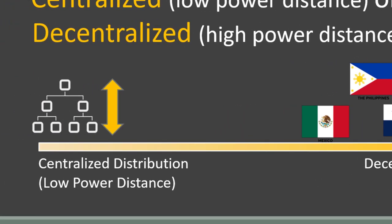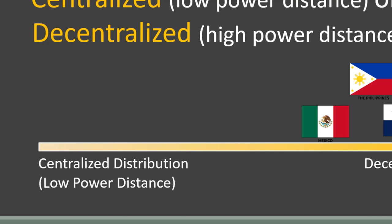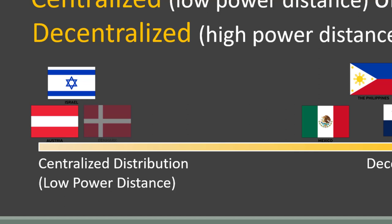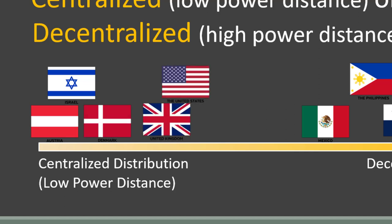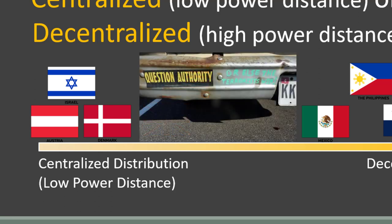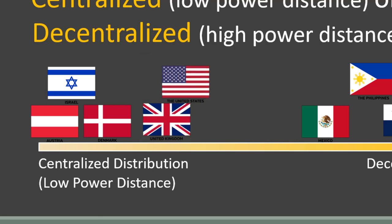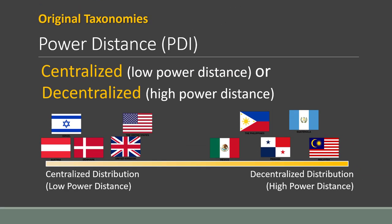On the other end of the scale, where power is more centralized and equality is more equalized, you'll find cultures like Austria, Israel, and Denmark—and yes, the U.S. and the U.K. In these cultures, members are less likely to do something simply because they are told to. In fact, it's common to see U.S. cars with 'question authority' bumper stickers. As a professor, I can tell you that there is a cultural difference between students who challenge my authority and those who just accept it as appropriate.